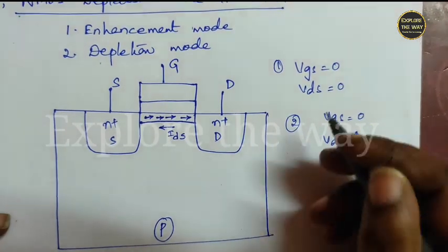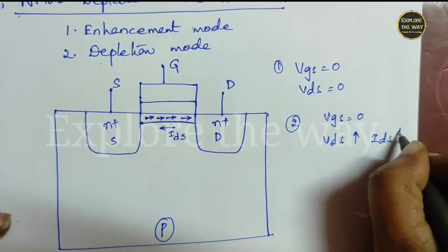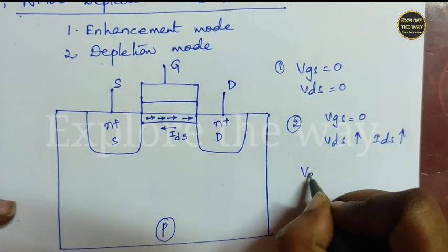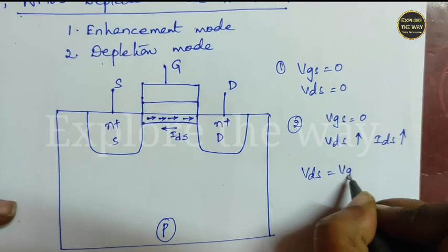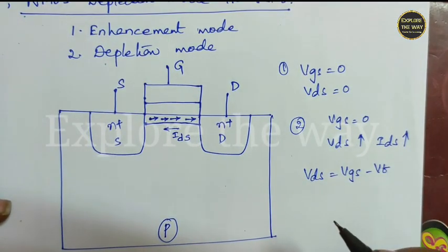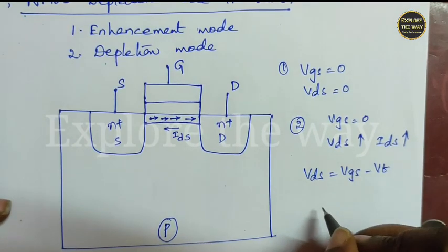As you increase VDS, IDS also increases. At one point, that means when VDS is equal to VGS minus VT, it reaches saturation point and current becomes constant.